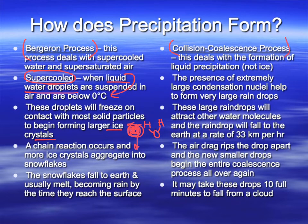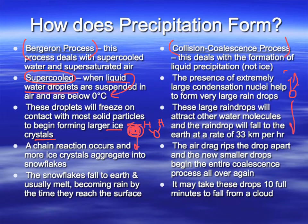The coalescence process: if you've ever watched raindrops on a window pane or your car windshield, you might notice several small drops, and as they fall they lump together into big drops. Those big drops are then heavy enough to fall out of the sky or drip down your window much faster — that's basically how the coalescence process works in the air.